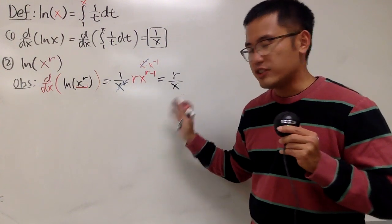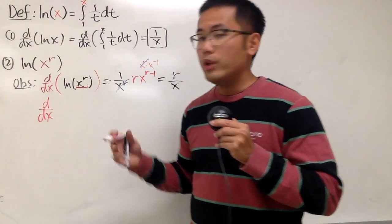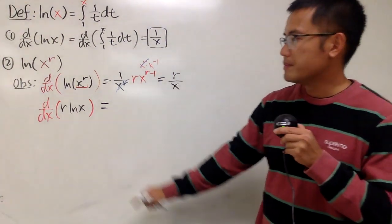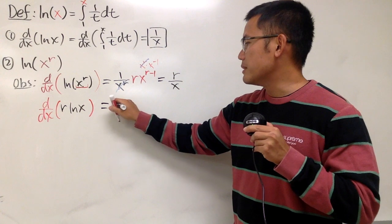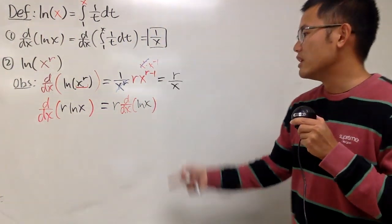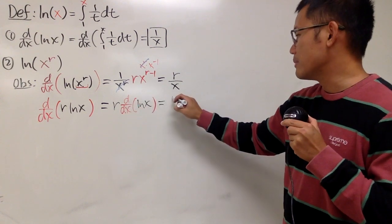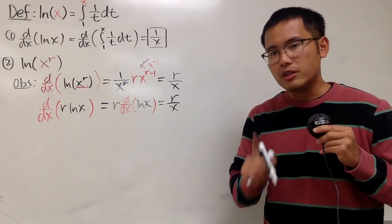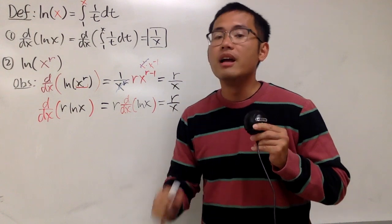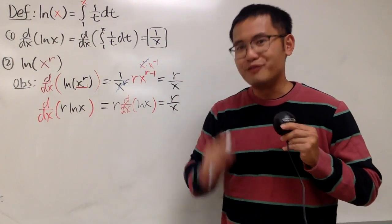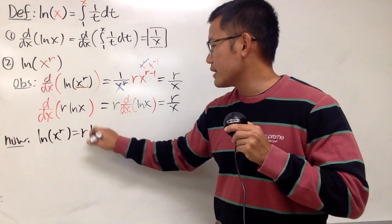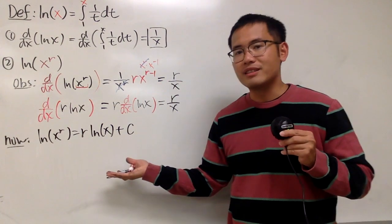That's our first observation. The second observation: if we differentiate r times natural log of x, by the constant multiple rule, we take r to the front and multiply by the derivative of ln(x), which is 1 over x. So we get r times 1 over x, which is r over x. Notice that both expressions have the same derivative, which means they differ by at most a constant. So we can say ln(x^r) equals r·ln(x) plus c.